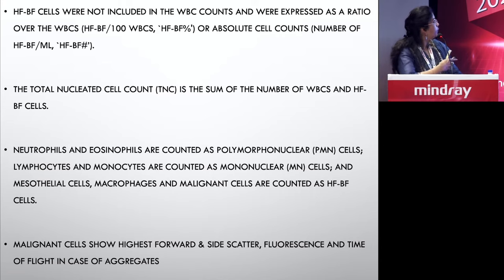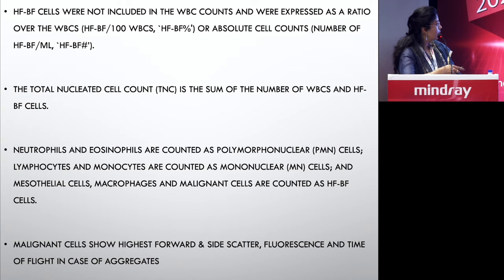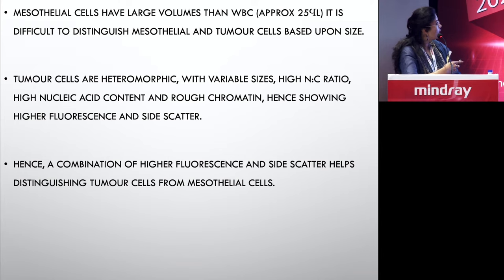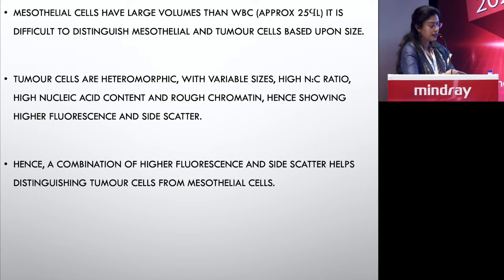High fluorescent body fluid cells are not included in the WBC count; they are expressed as a ratio to WBCs or as an absolute cell count. Total nucleated cell count is the sum of WBCs and high fluorescent body fluid cells. Neutrophils and eosinophils are counted as polymorphonuclear cells; lymphocytes and monocytes as mononuclear cells; and mesothelial cells, macrophages, and malignant cells together appear in the high fluorescent body fluid area. A combination of high fluorescence and side scatter is very useful to distinguish tumor cells from mesothelial cells.